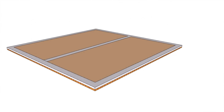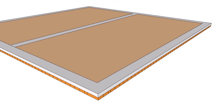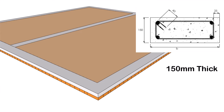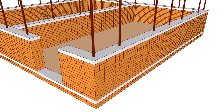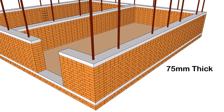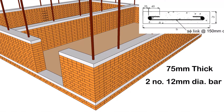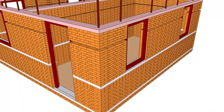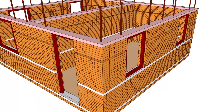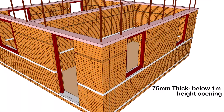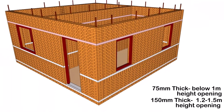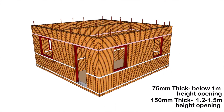Horizontal band at plinth level: minimum thickness should be 150 mm with 12 mm diameter, 4 bars. Sill level, located below the window: minimum thickness should be 75 mm for openings less than 1 meter height, and 150 mm for openings more than 1 meter height, with 12 mm diameter, 2 bars. Lintel level: minimum thickness should be 75 mm for less than 1 meter height openings, and 150 mm for more than 1 meter height, with 12 mm diameter, 2 bars.